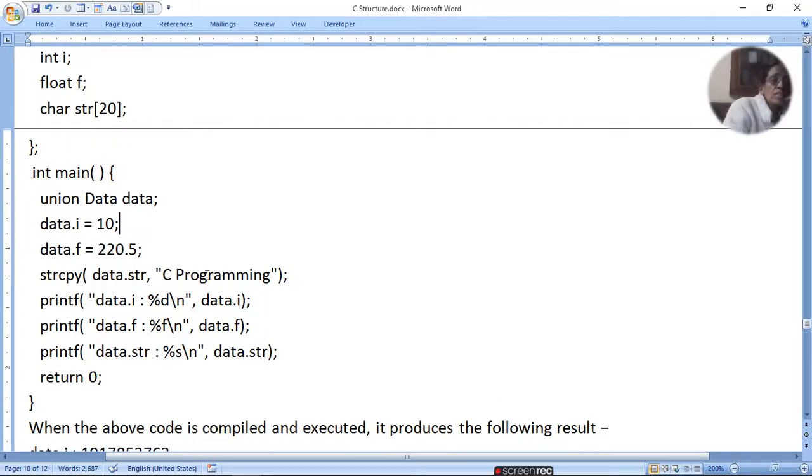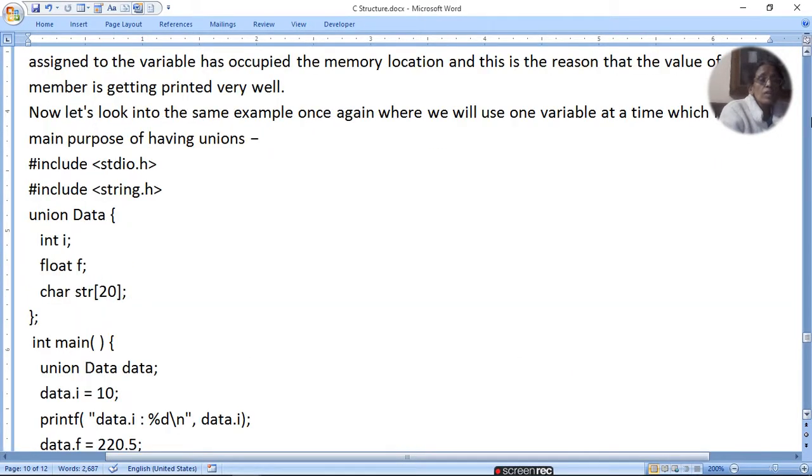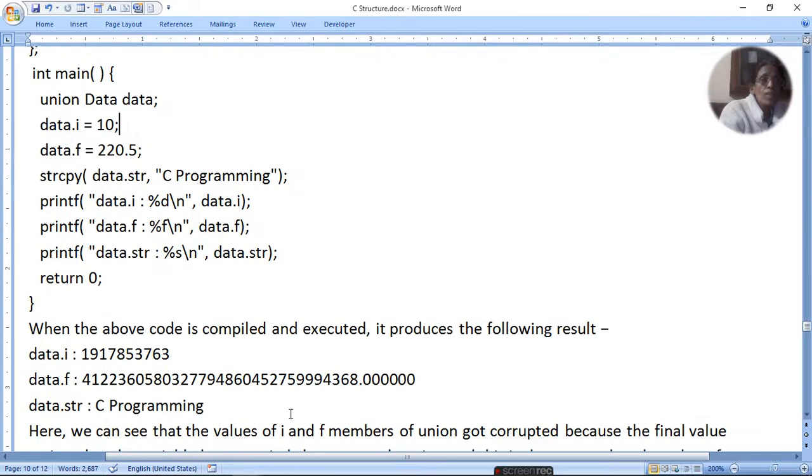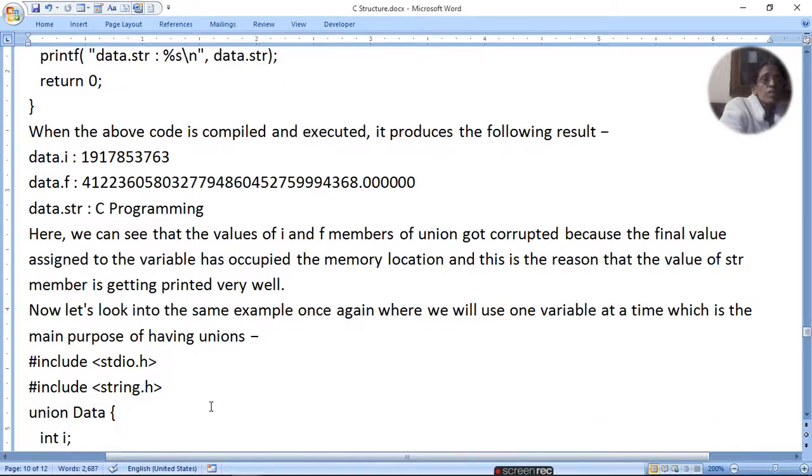Now when we print this, what will happen? It will give an error. Why? Because we are printing all three data members. It will give some random number and only print C programming correctly. Why? Because that came last, and its memory was printed correctly. Here we can see that values of i and f members of union got corrupted because the final value assigned to the variable has occupied the memory location. This is the reason that the value of str member is getting printed very well.